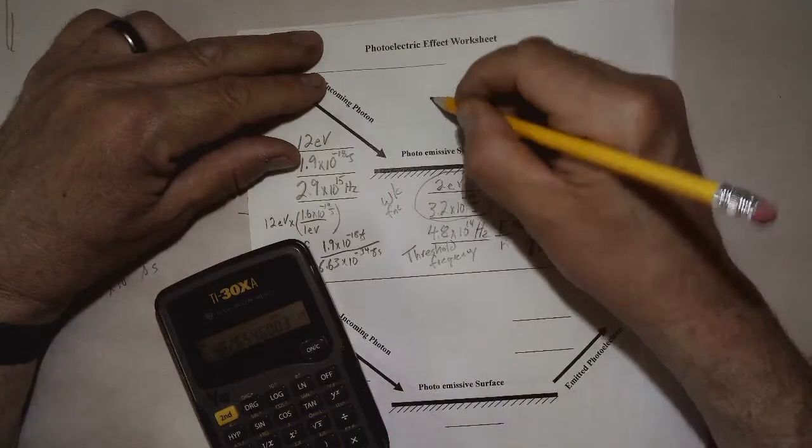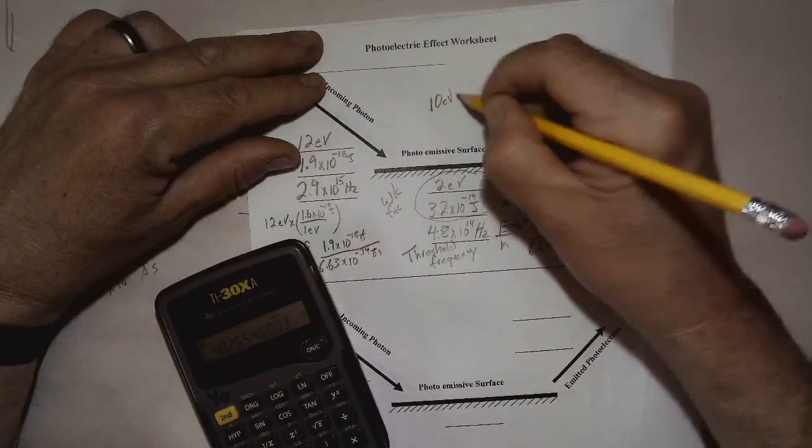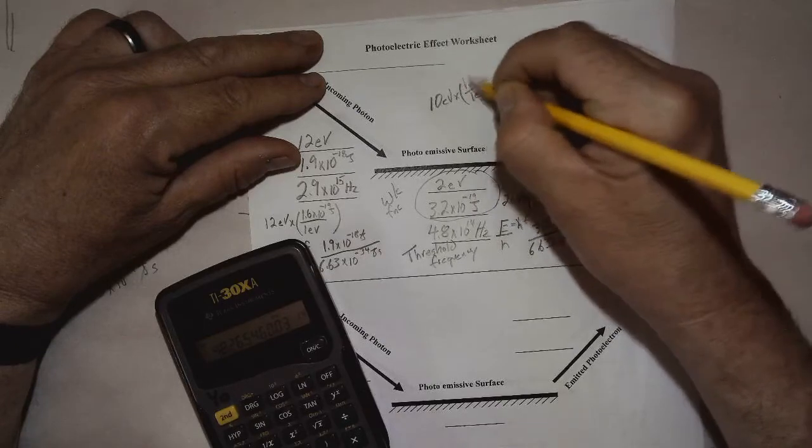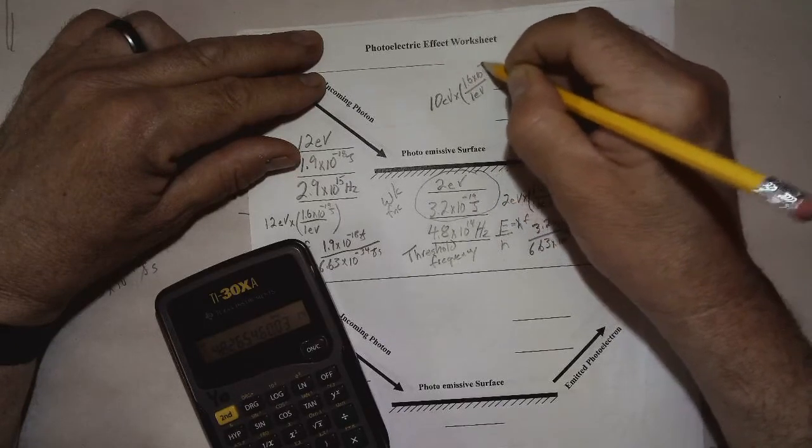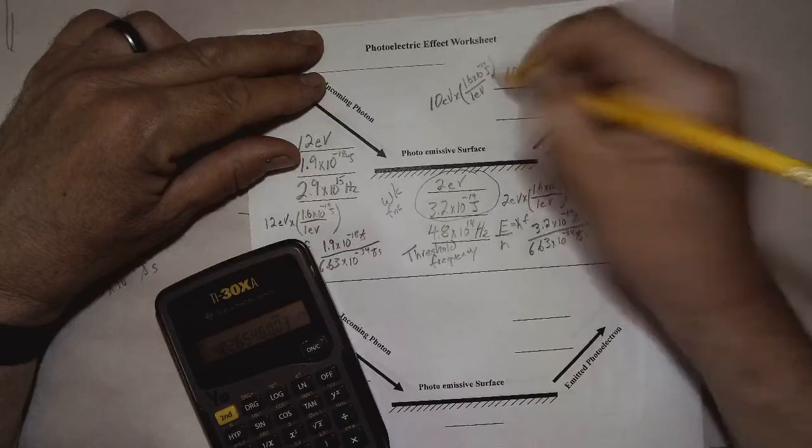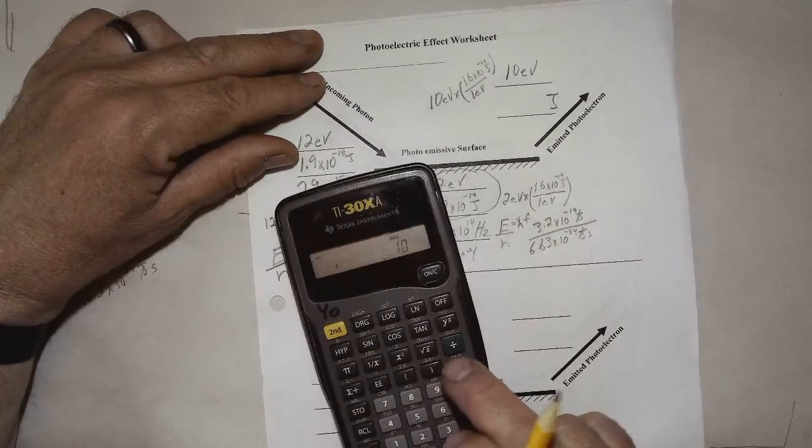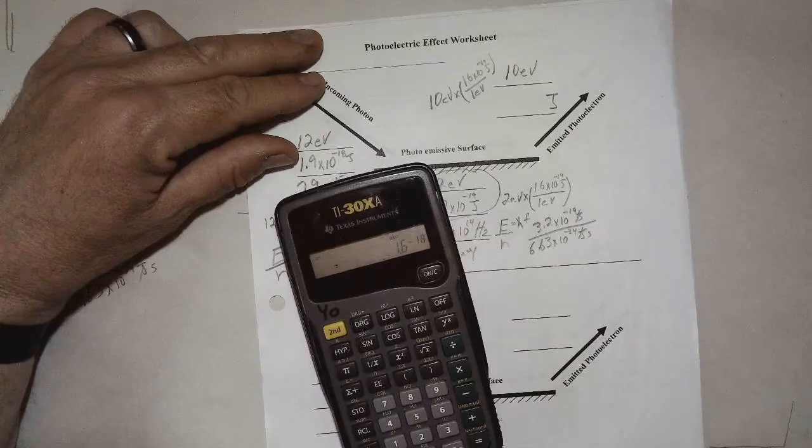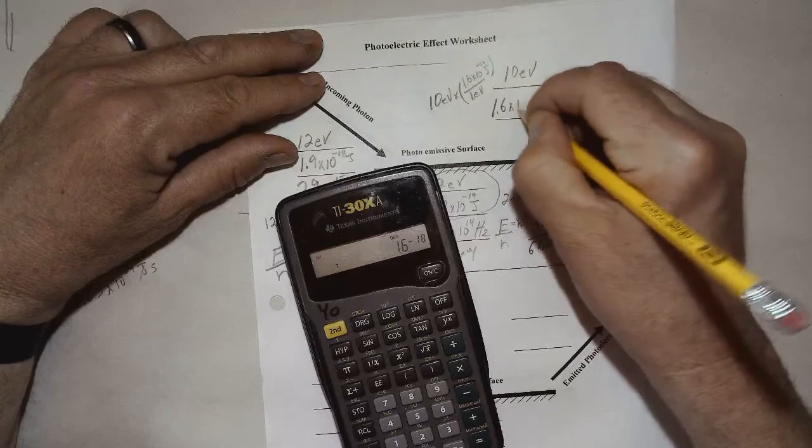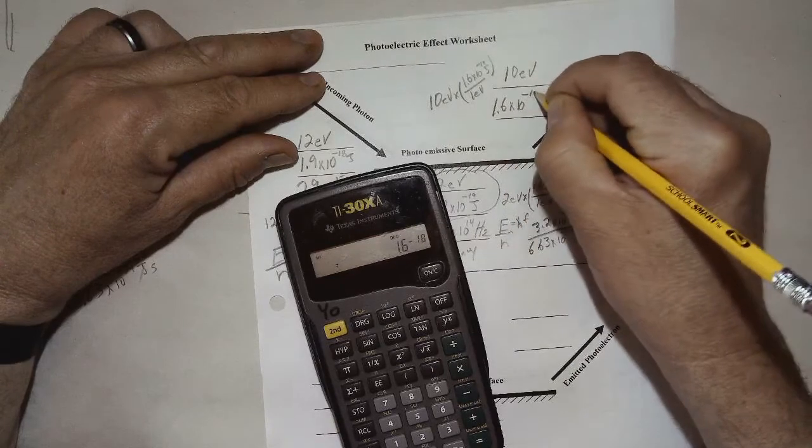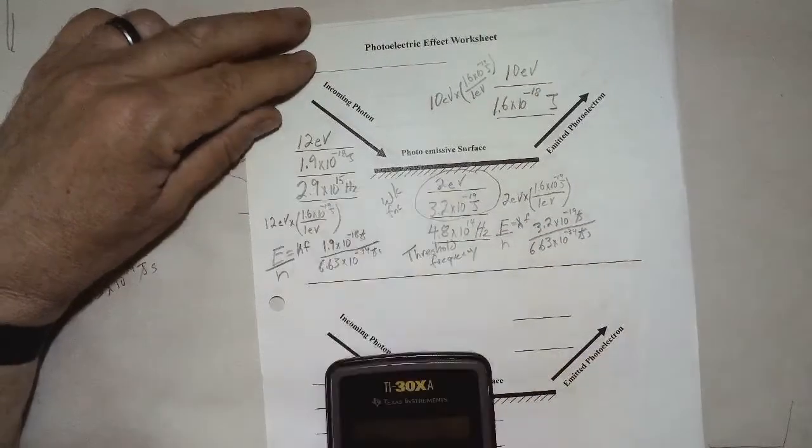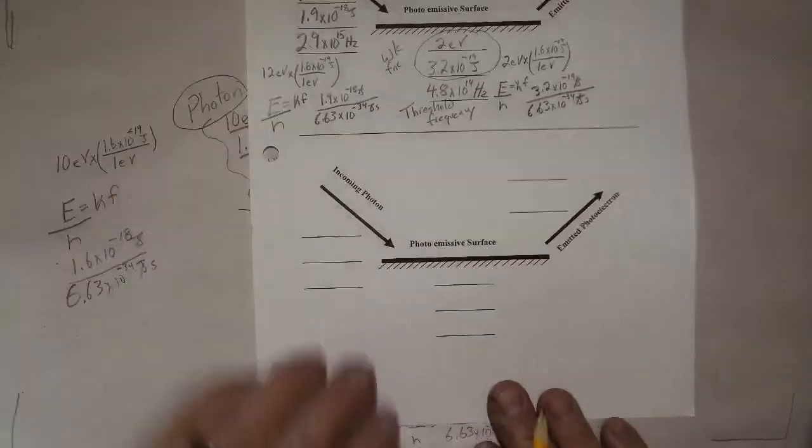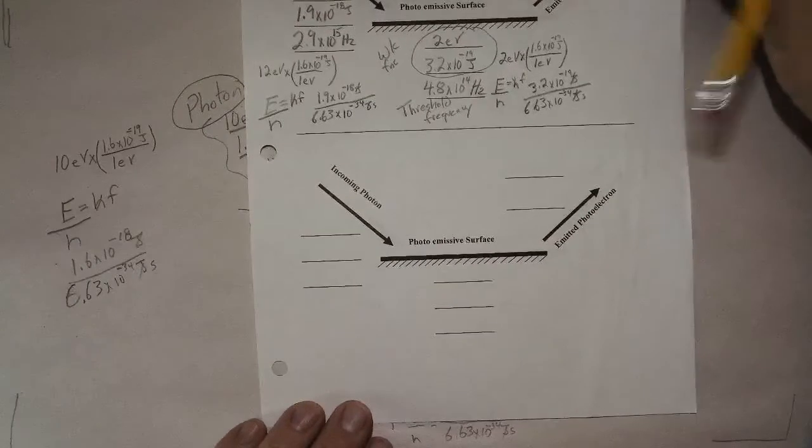So once again, 10 eV times 1.6 EE19 negative gives us 1.6 times 10 to the minus 18th joules. That is all there is to it. Why don't we give you one to work on for yourself?